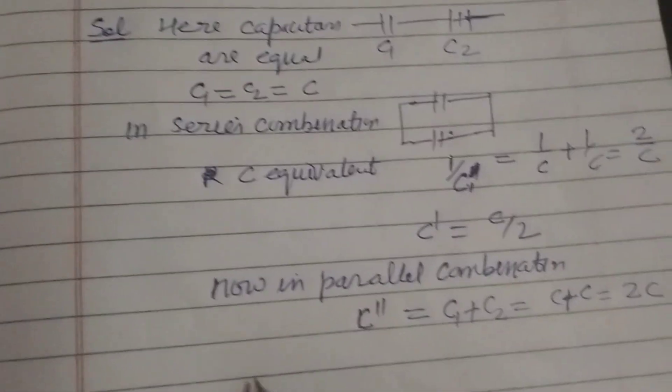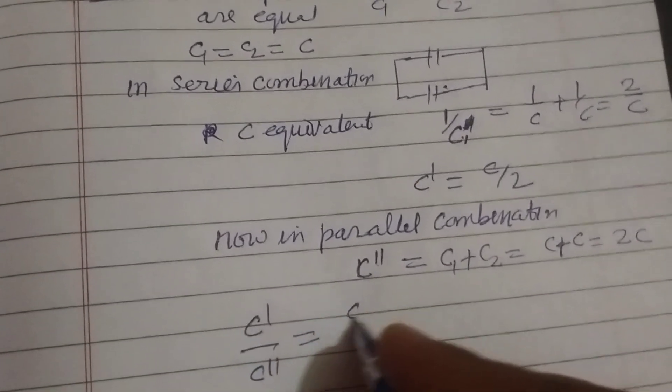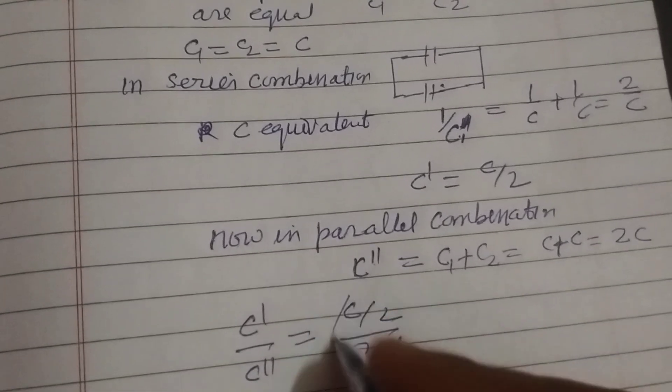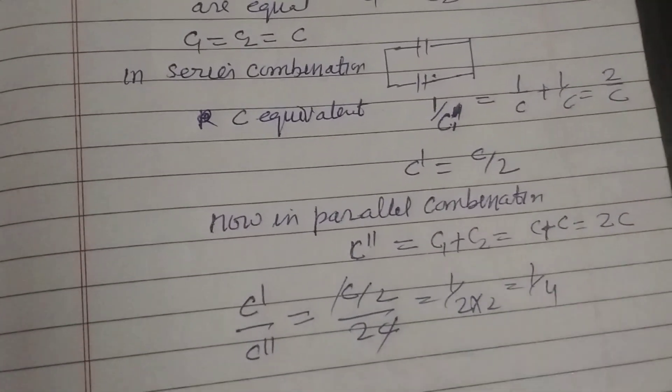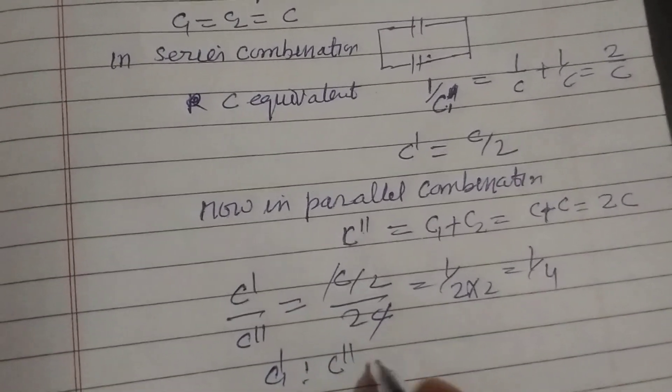Now ratio of C dash to C double dash equals C by 2 over 2C, so C cancels. This is 1 upon 2 times 2, which is 1 by 4. So C dash ratio C double dash equals 1 ratio 4.